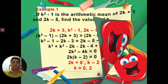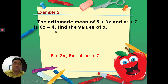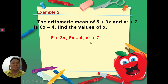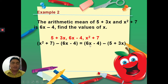For example number two: the arithmetic mean of 5 + 3x and x² + 7 is 6x − 4; find the values of x. Here the arithmetic mean is the second term, so the arrangement is: first term = 5 + 3x, second term = 6x − 4, third term = x² + 7. I choose to subtract third minus second equals second minus first.